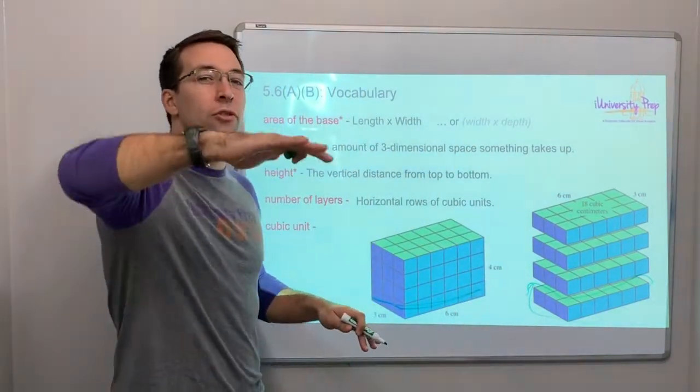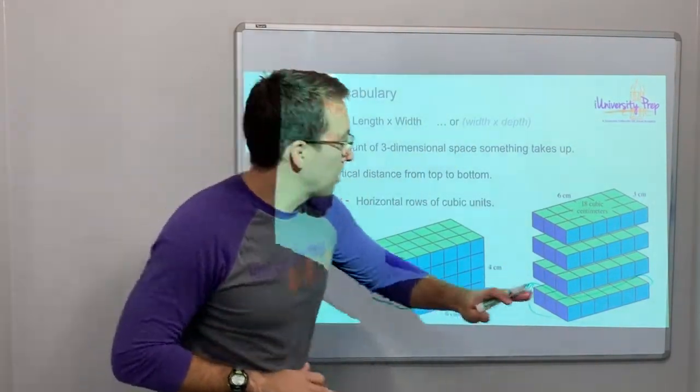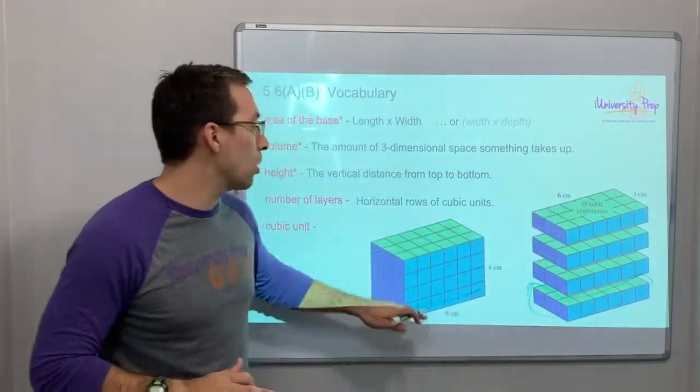Number of layers. That's the horizontal rows of cubic units. So we can break that into layers. It's four layers tall.